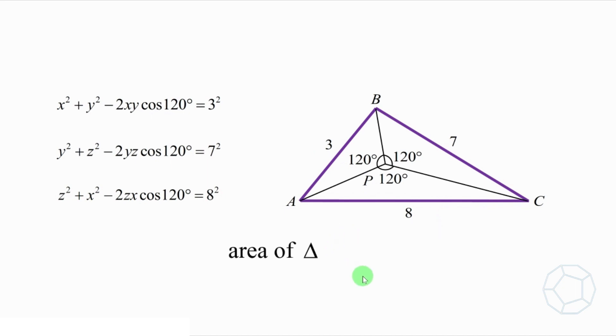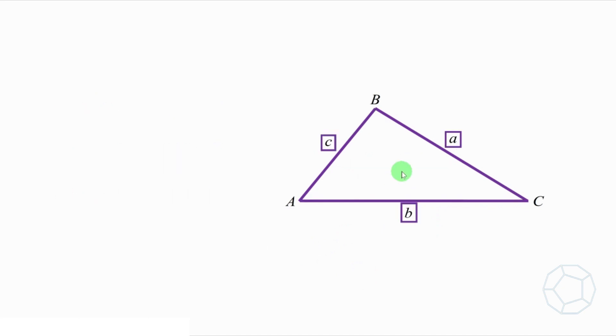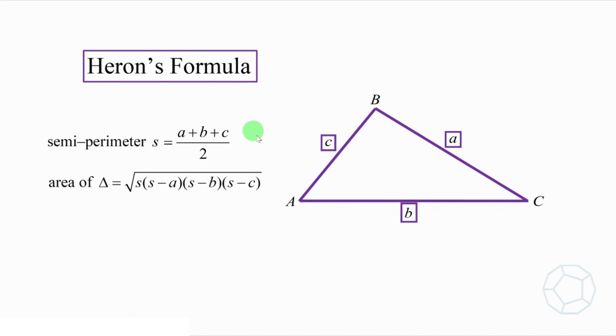Let's look at an important formula to find the area of triangle. If the three sides of triangle are A, B, and C, then we find its semi-perimeter S, which is equal to A plus B plus C all over 2. The area of the triangle is equal to the square root of S times bracket S minus A times bracket S minus B times bracket S minus C. This is the famous Heron's formula.